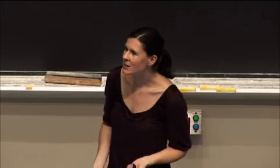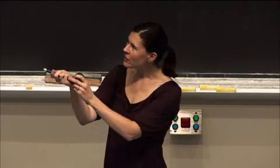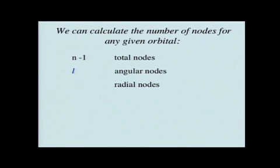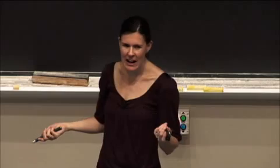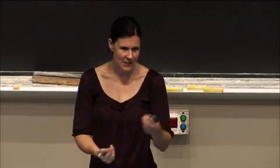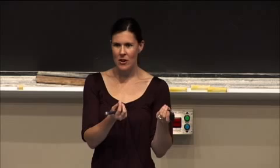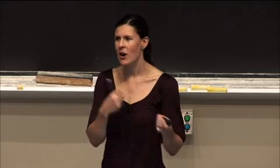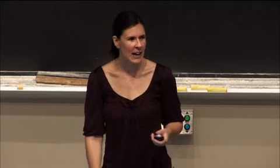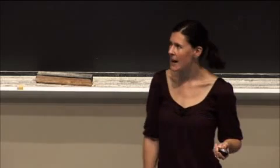The equation for radial nodes is n minus l minus 1. You can use that equation, or figure it out by subtracting: if you know the total number of nodes and the angular node number, you know how many radial nodes remain — so you don't really have to memorize that.